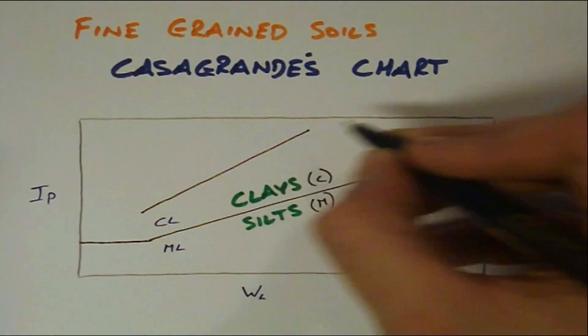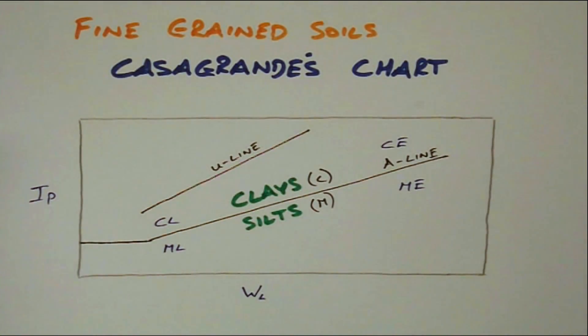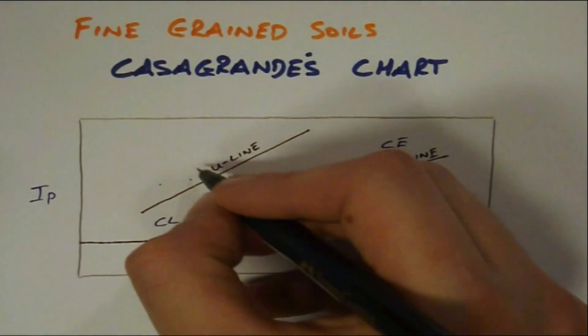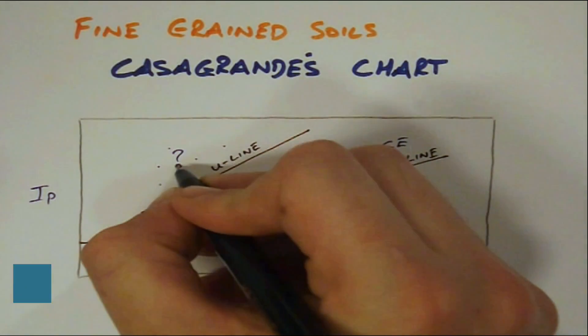The U line is included in this plot as it defines the validity of the results. That is, if data plots above the U line, the Atterberg limit tests should be redone.